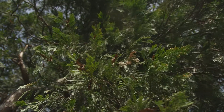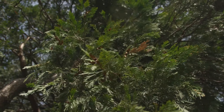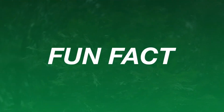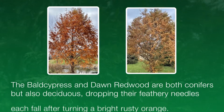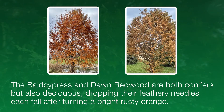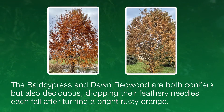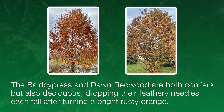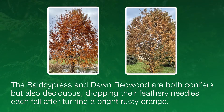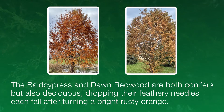As with most other groups in nature, there are exceptions. Fun fact: bald cypress and dawn redwood are both conifers but also deciduous, dropping their feathery needles each fall after turning a bright rusty orange.